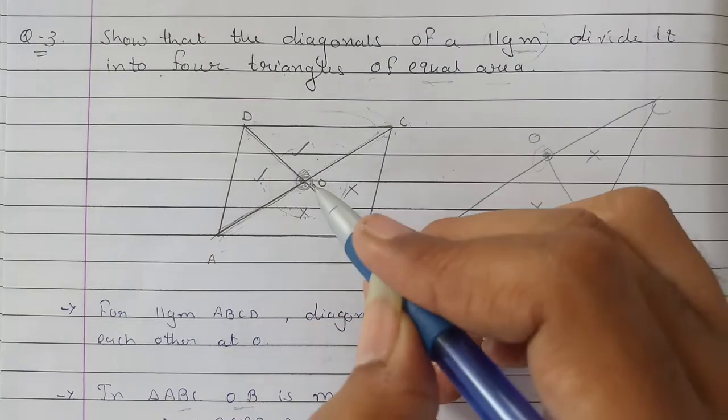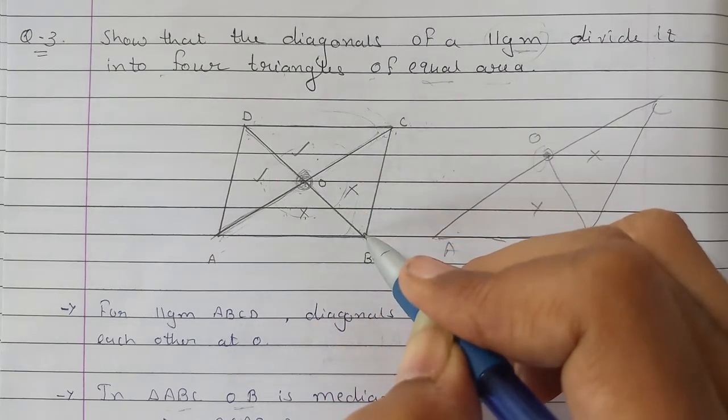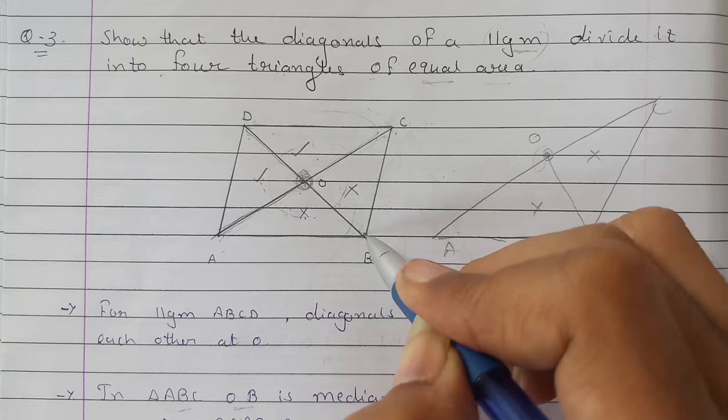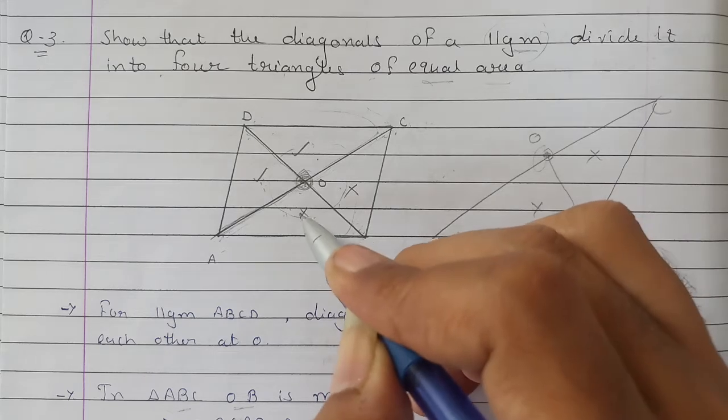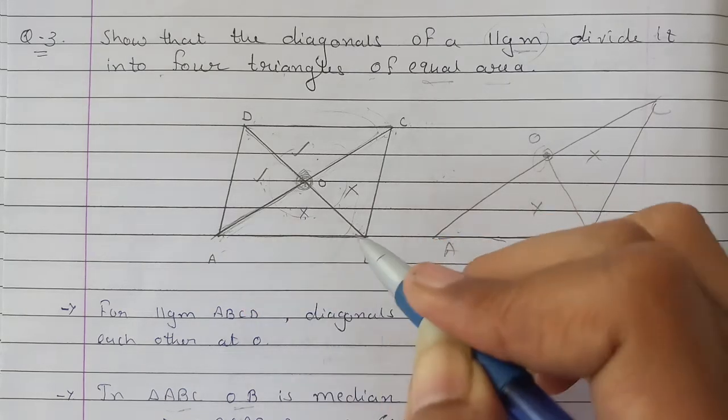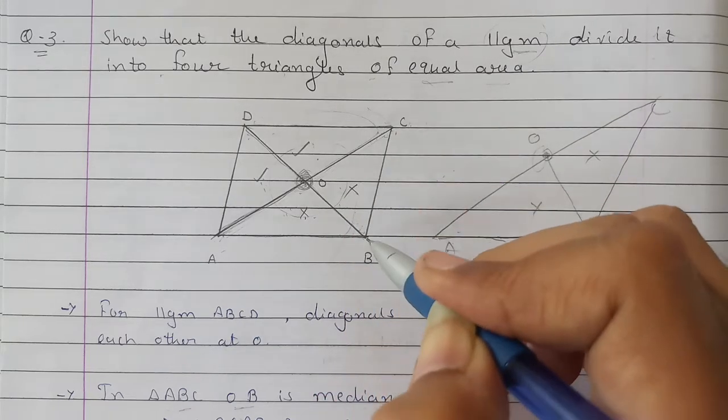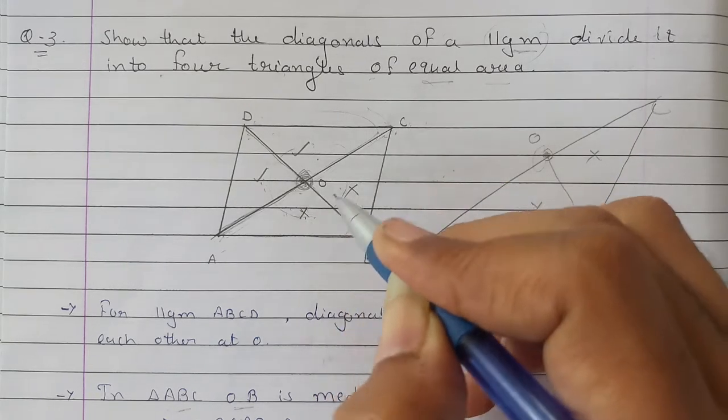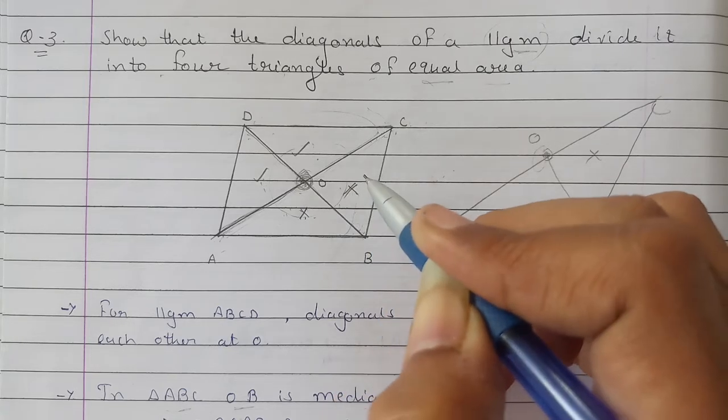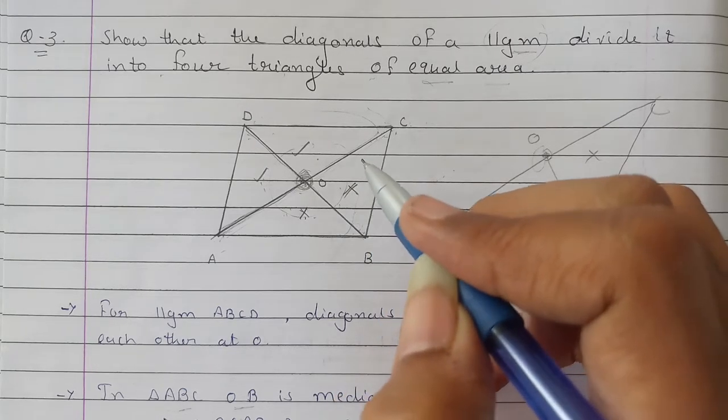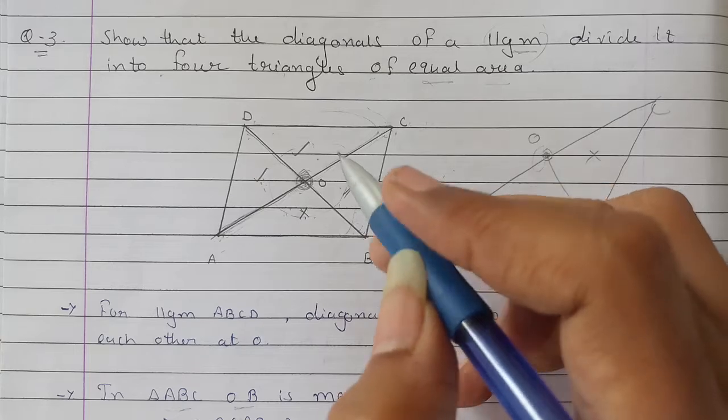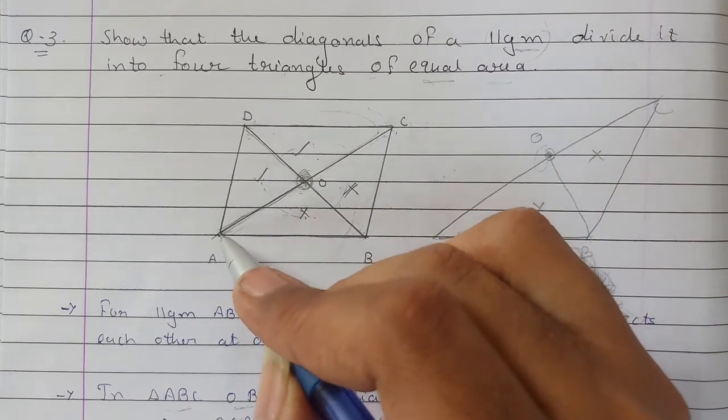is the midpoint of AC. That means OB is the median. Therefore, triangle ABO and triangle CBO have equal area. Similarly, consider triangle